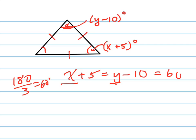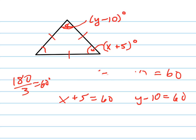So these are each equal to 60. You've got X plus 5 equals 60, and Y minus 10 equals 60. You don't want to set them equal to each other. Even though it's true, it doesn't help you. You want to set them equal to 60.